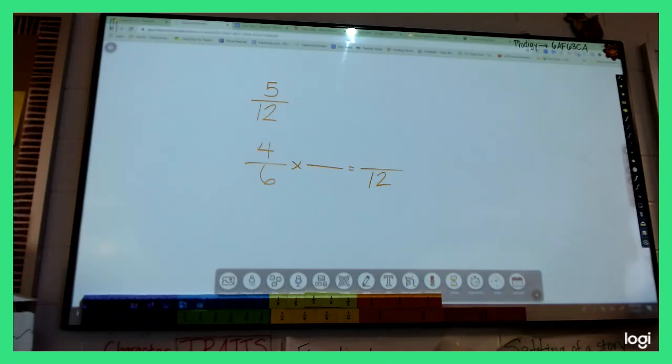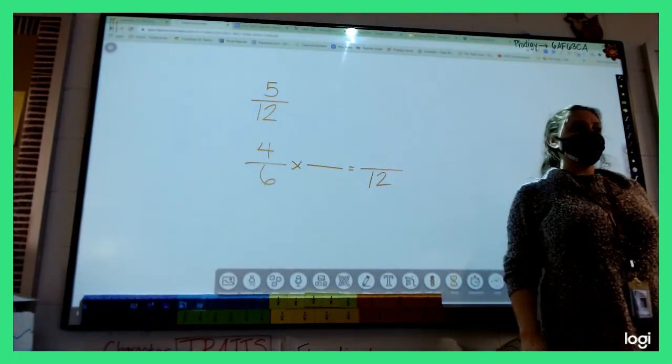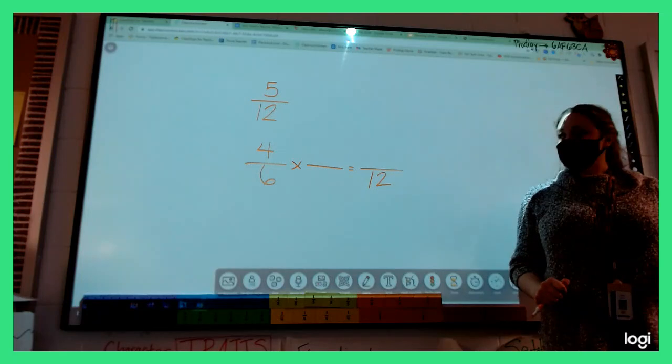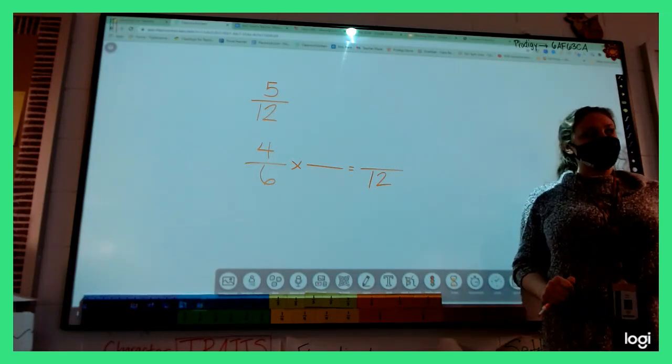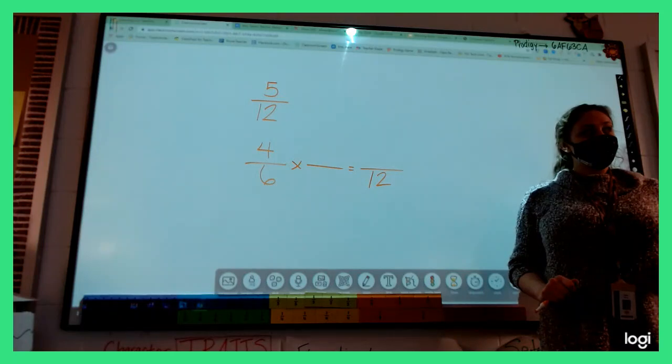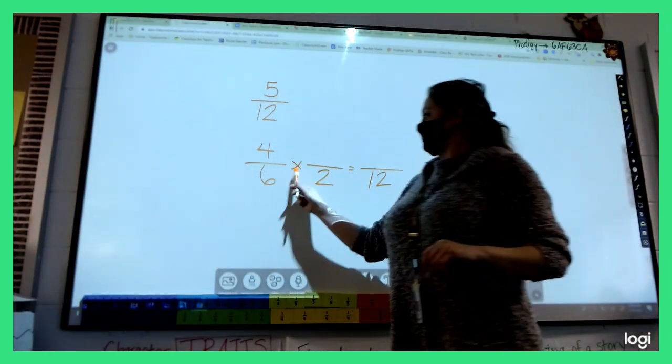All right, now our goal, we want twelve in the denominator, so I can put twelve right here. I have to get twelve. So, I'll give everyone a moment to write that down, and then we need to decide, well, if my goal is twelve, what's the only number that will work here? Angie? Three. Close. Think that again. Six times what is twelve? Two. Two. Nice job.